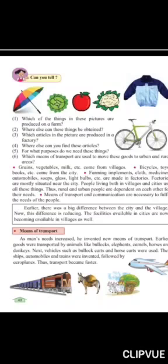Green vegetables, milk, etc. come from the villages. Bicycles, toys, books, etc. come from the city. Farming implements, cloth, medicine, automobiles, soap, glass, light bulbs, etc. are made in factories mostly situated near the city. People living both in villages and cities use all these things. Thus, rural and urban people are dependent on each other for their needs.